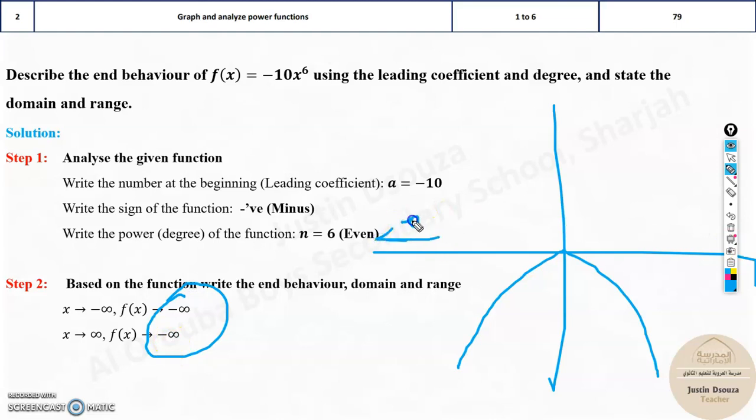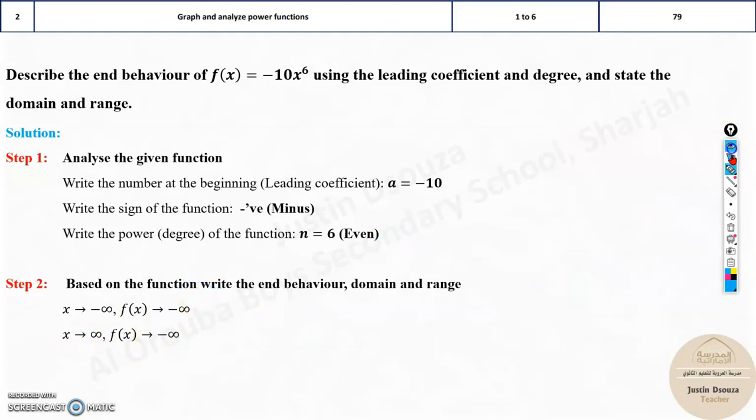Whereas when x is negative infinity, it is going downwards, minus infinity. Even when it is increasing, it is going downwards, that is negative infinity. As x goes to minus infinity, f(x) is minus infinity. As x goes to positive infinity, f(x) is negative infinity.